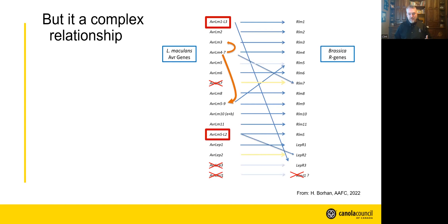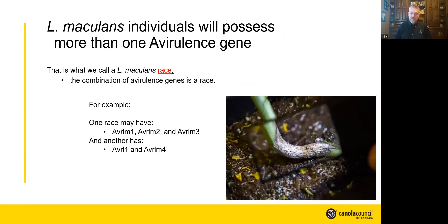This is where things get a little bit tricky. The relationship between these avirulence genes and resistance genes is kind of complicated — a little bit messy, but not to worry. You don't need to know these details unless you happen to be a pathology nerd. You might hear talk about races of the blackleg pathogen Leptosphaeria maculans. A fungal individual might have more than one avirulence gene — it might have many avirulence genes. Which avirulence genes it actually has is how we describe a race. So when you hear of race tests being used for blackleg, it's really just referring to what avirulence genes are actually present.